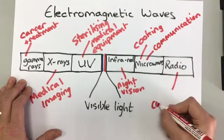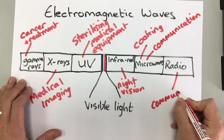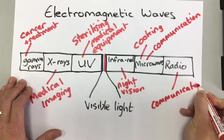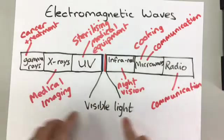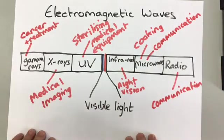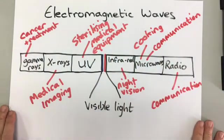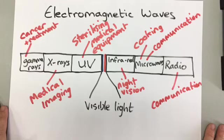Radio waves, we also use for communication. Things like the radio and also walkie-talkies use radio waves. So we've got uses for all of them. Obviously, visible light we use to see things, but all the other ones have uses for various different things.